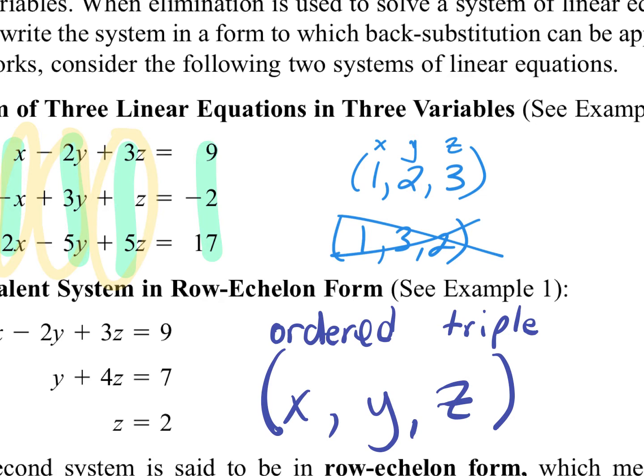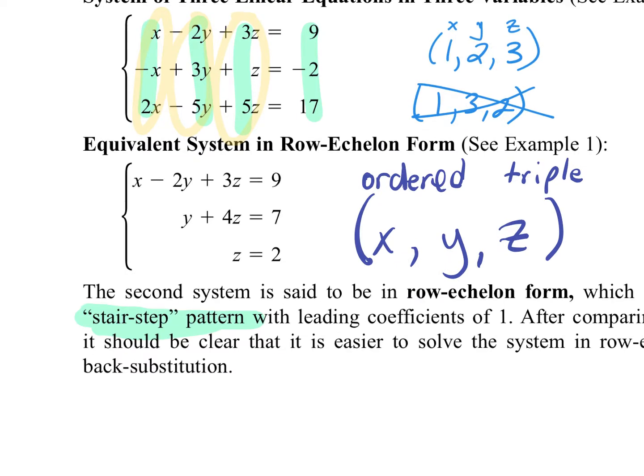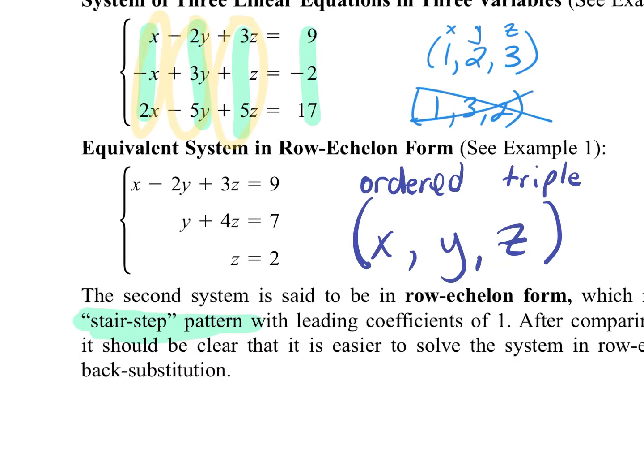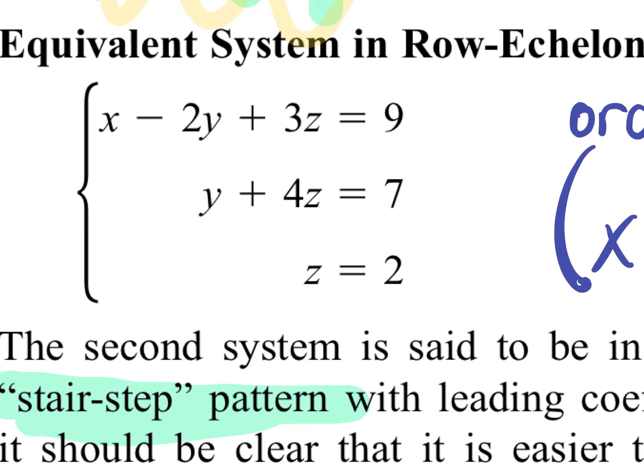So two things we're going to talk about today: solving when it's in row echelon form — it's called a stair-step pattern. If I gave you guys this problem without explaining anything, I think most of you could solve this. How would you solve this to find out what x, y, and z equal?